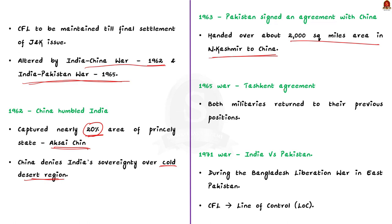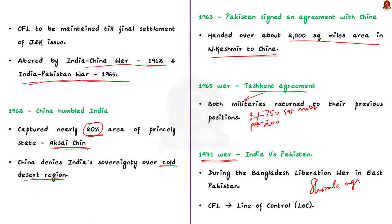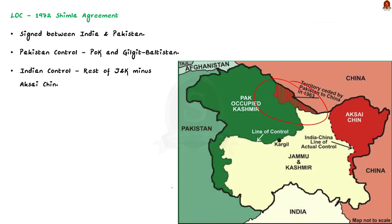Then came the 1965 war, which saw both India and Pakistan occupying each other's territories. India captured nearly 750 square miles while Pakistan took over about 200 square miles. But with the signing of the Tashkent Agreement, both militaries returned to their previous positions along the Line of Control. Then came the 1971 war, which ended with the Shimla Agreement — this turned the ceasefire line into the Line of Control, as it is called today.